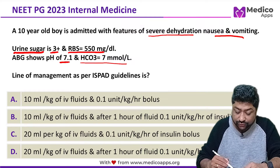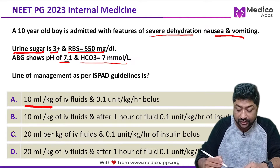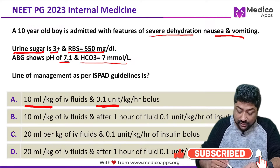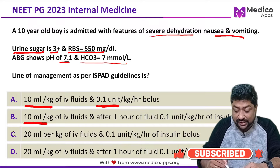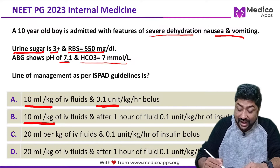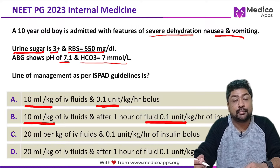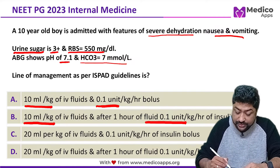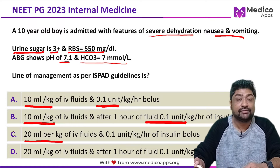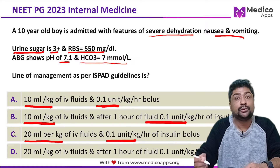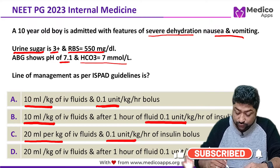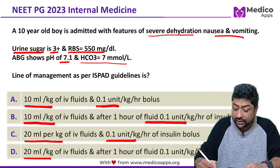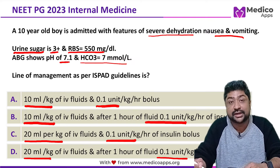The options are: (A) 10 ml/kg IV fluid and insulin 0.1 unit/kg body weight; (B) 10 ml/kg IV fluid and after 1 hour, insulin at 0.1 unit/kg/hr; (C) 20 ml/kg IV fluid and insulin 0.1 unit/kg/hr; and (D) 20 ml/kg IV fluid and after 1 hour, insulin at 0.1 unit/kg/hr.